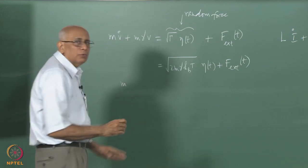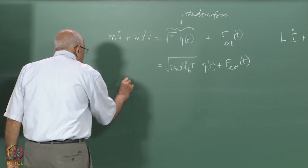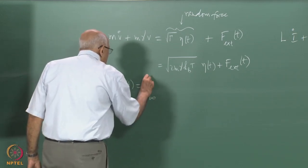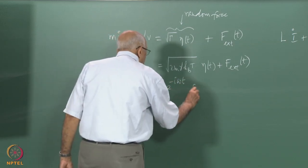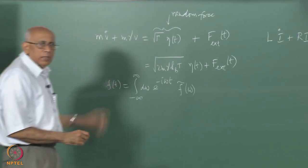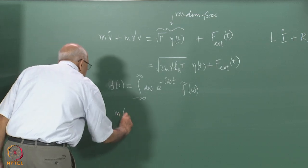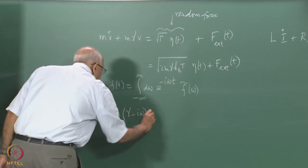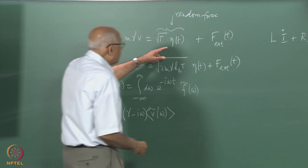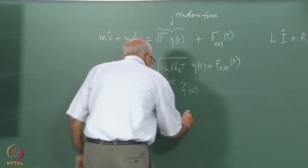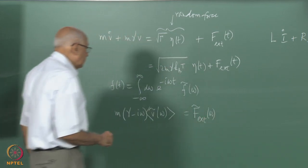Let us do this directly in terms of Fourier components. I have in mind formally writing a function of time as the integral from minus infinity to infinity of dω e^{−iωt} f̃(ω) and its inverse transform. This immediately leads us to m(γ − iω)⟨Ṽ(ω)⟩ equal to f̃_external(ω), since the noise term vanishes upon averaging.